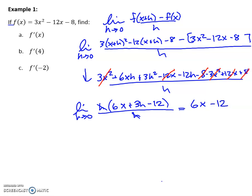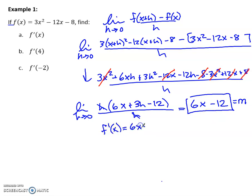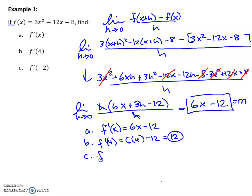This is my relationship for slope or for the derivative. The derivative of f of x is 6x minus 12 — that's part A. For part B, I'm just plugging in 4 to that equation, so I end up with 24 minus 12, or 12. And then for part C, same thing — I'm plugging in negative 2, and I end up with negative 24.